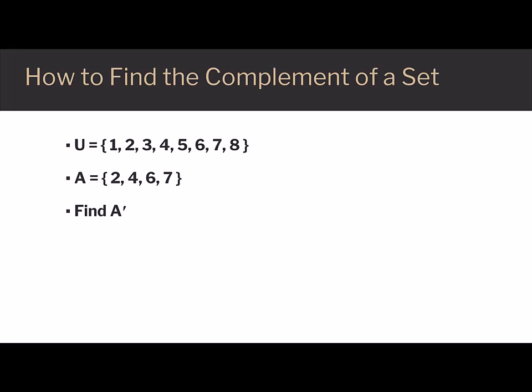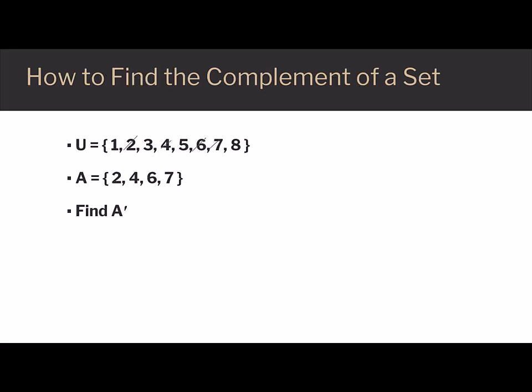To find the complement of set A, we'll remove those numbers from the universal set. So cross out 2, 4, 6, and 7.